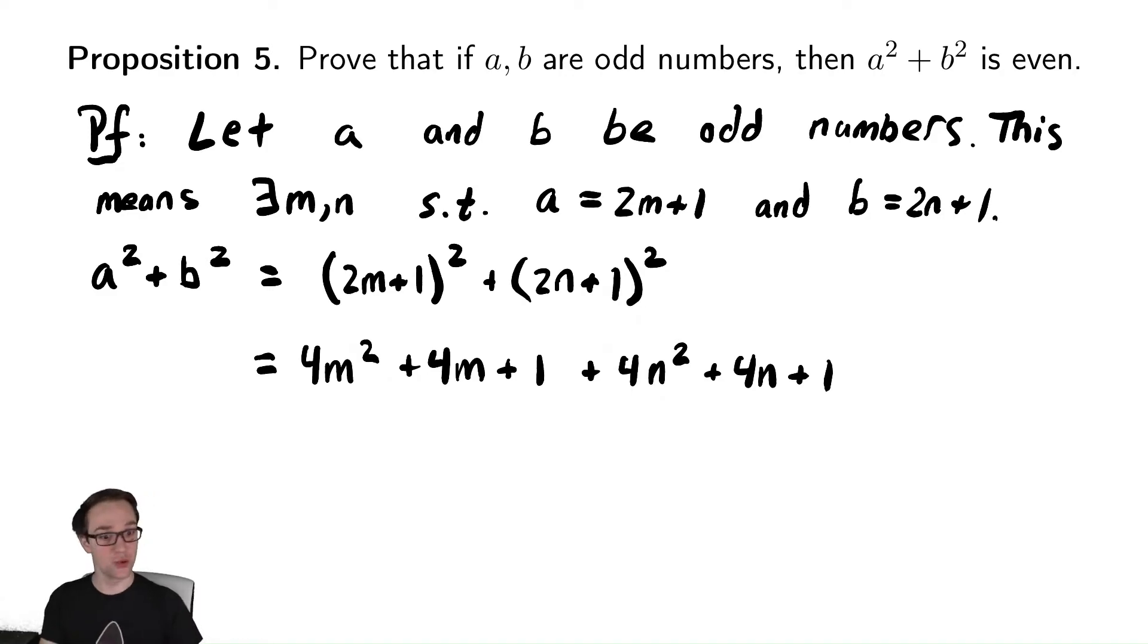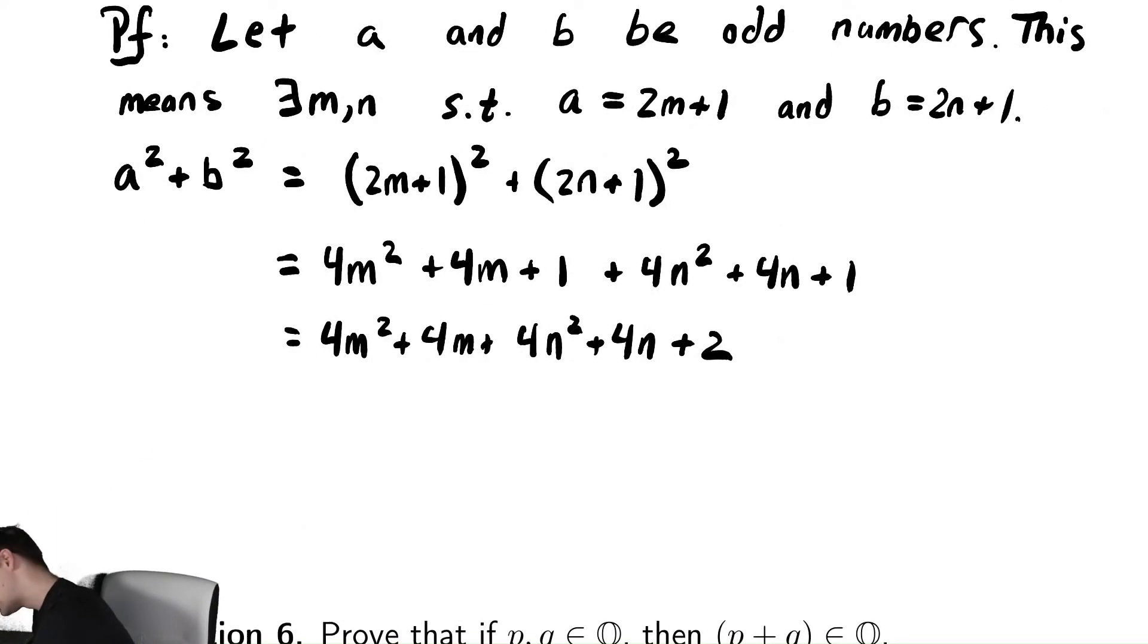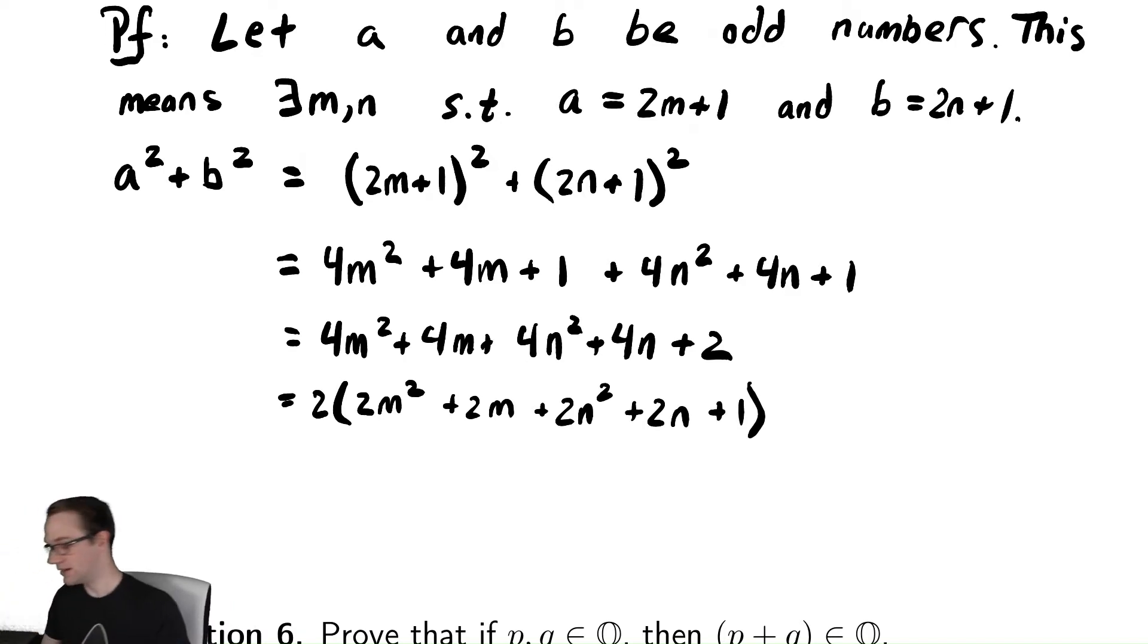And now my goal is to write this as a multiple of 2. Maybe we identify that this looks like 4m² + 4m + 4n² + 4n + 2, grouping together all of my like terms. Then we can hopefully see that everything there is a multiple of 2, so we can factor that out. This equals, if I factor out a 2, I'm left with 2(2m² + 2m + 2n² + 2n + 1). Which is a messy expression, but thankfully...